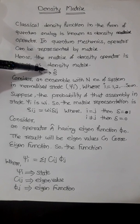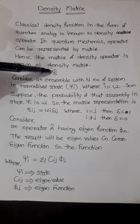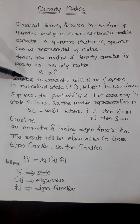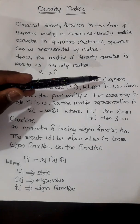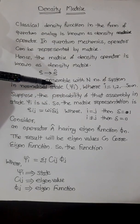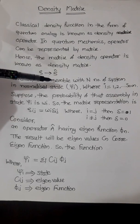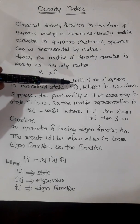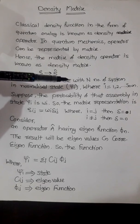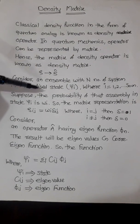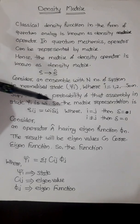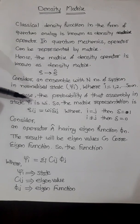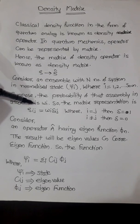The density matrix is indicated by rho (ρ). We consider an ensemble with N number of systems in normalized states ψᵢ, where i = 1, 2, 3, and so on. The probability of that assembly being in state ψᵢ is wᵢ.